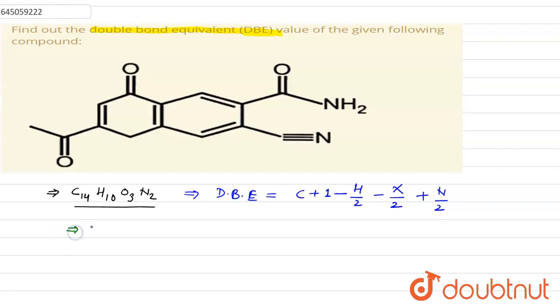Now, so DBE for this compound is equals to 14 plus 1 minus hydrogen is 10 divided by 2 minus there is no halogen so 0 by 2 and there are 2 nitrogen so plus 2 by 2.